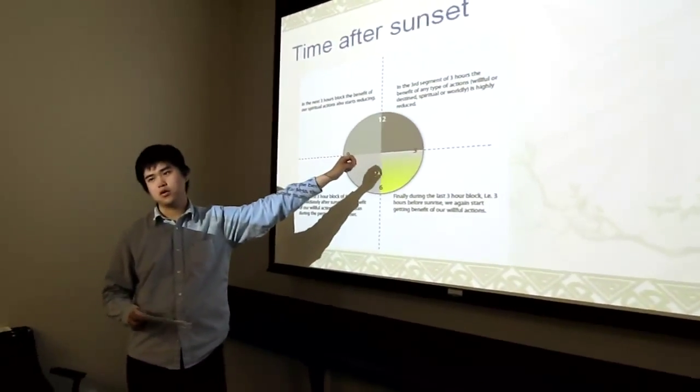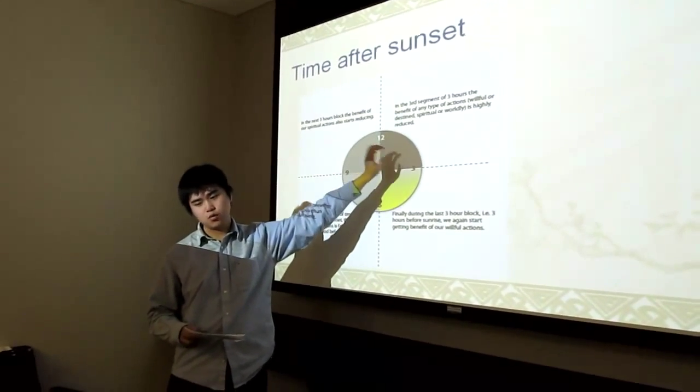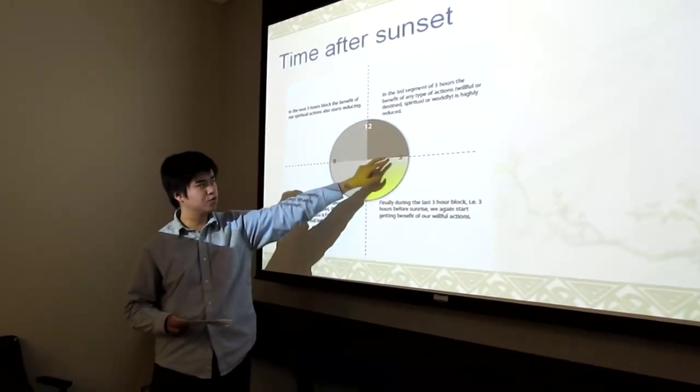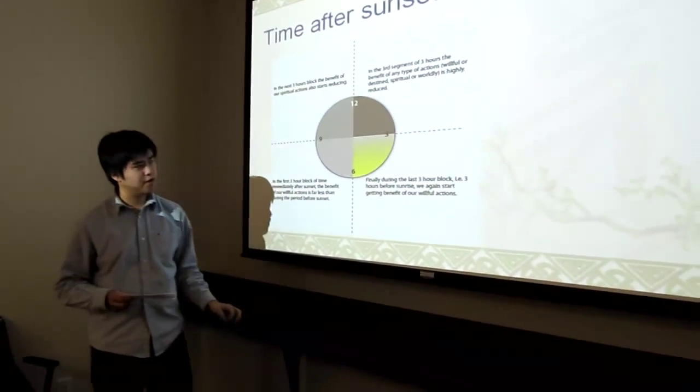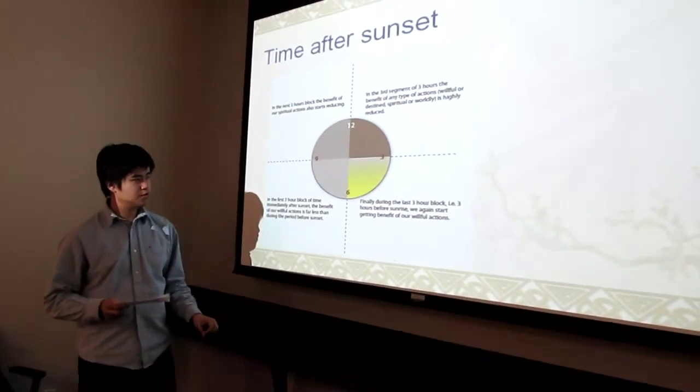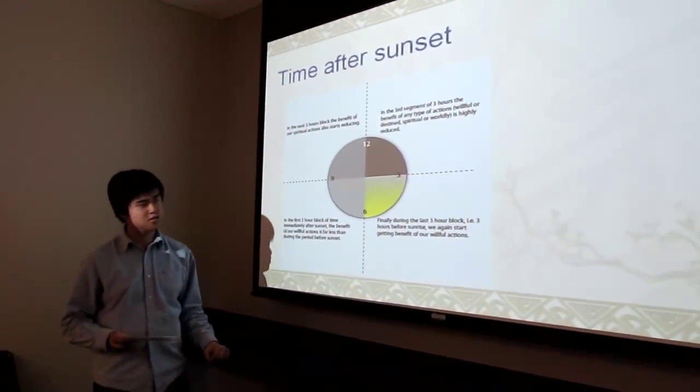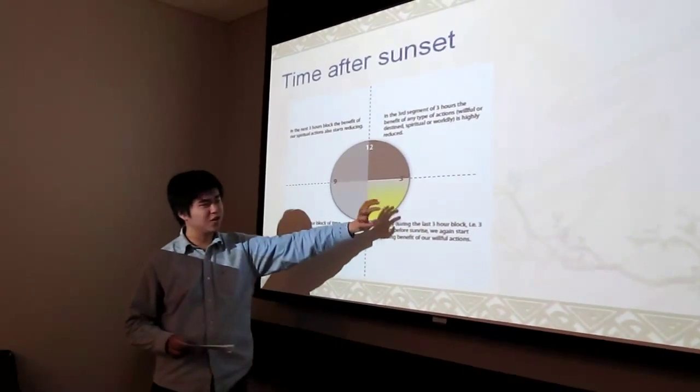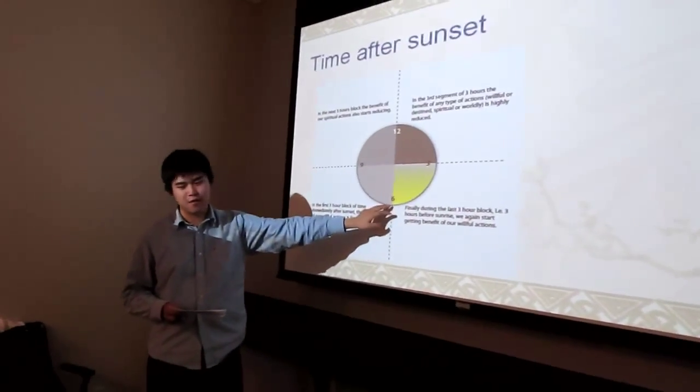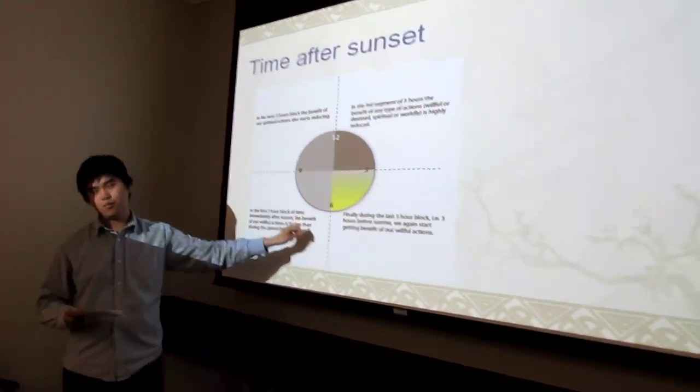In this part, it's a good time to sleep now, in this 12 p.m. to 3 a.m. And as a final block, during the last three hours before sunrise, we again start getting benefit of our willful action. That means if you are not sleeping at 3 a.m. to 6 a.m., it's like a motor.